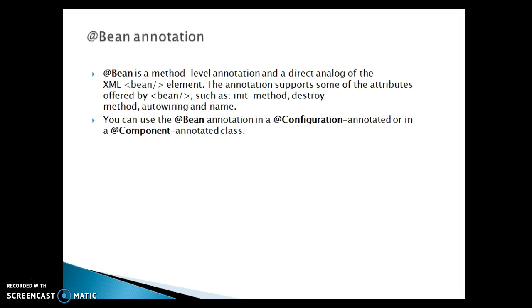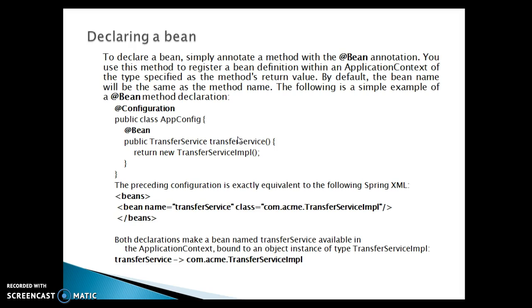As we had seen in the earlier video tutorial, when you configure a Java class as a Spring bean in a Spring configuration file, the bean tag has a lot of attributes like init-method, destroy-method, auto-wiring, and the name or id of the bean. You can specify these attributes along with the @Bean annotation as well. You can use @Bean annotations in a @Configuration-annotated class or a @Component-annotated class. Now declaring a bean — how we can declare a bean in a class which is annotated with @Configuration? Simply annotate a method with the @Bean annotation.